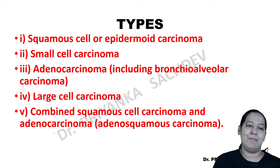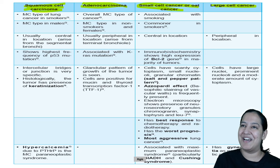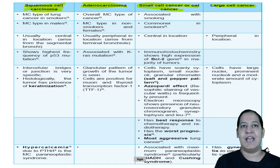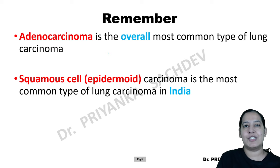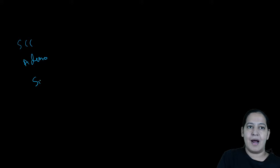Now I will teach you all five histological types one by one. Starting with squamous cell carcinoma, also known as epidermoid carcinoma. I will ask you six questions with four options: squamous cell carcinoma, adenocarcinoma, small cell carcinoma, and large cell carcinoma (options A, B, C, D).